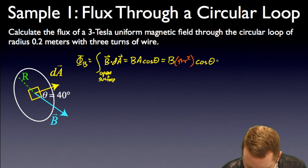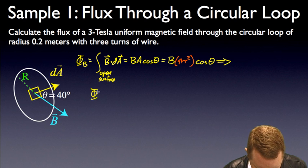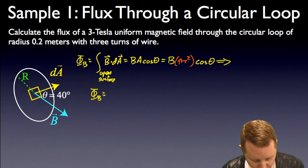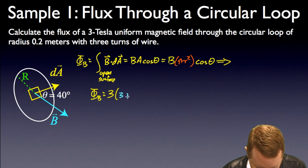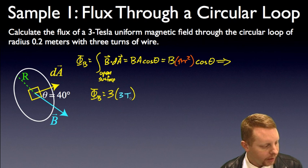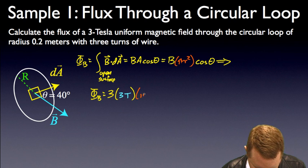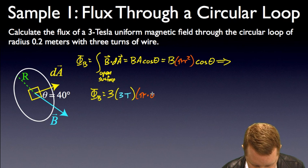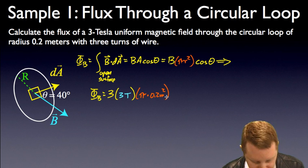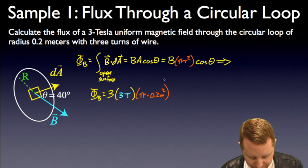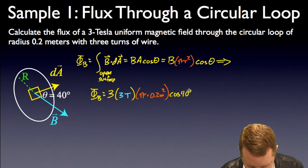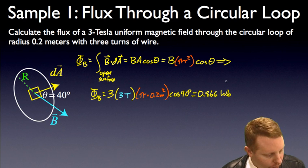Which implies then that our total flux φ_B is going to be, well with three turns of wire, let's multiply the entire thing by three. So three turns of wire times our magnetic field strength B, which is three Tesla, times the area, π times our radius squared, which is 0.2 meters squared, times the angle between dA and our magnetic field vector B, which is cosine 40 degrees, gives us an answer of about 0.866 Webers.